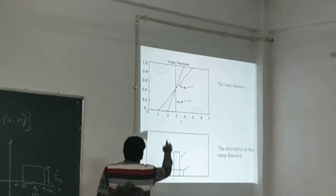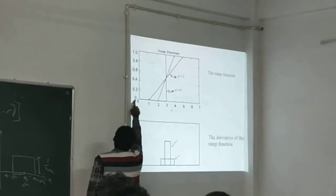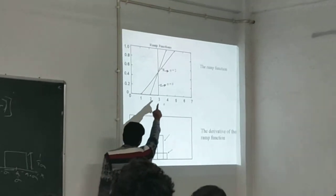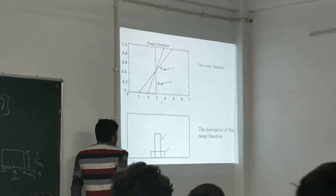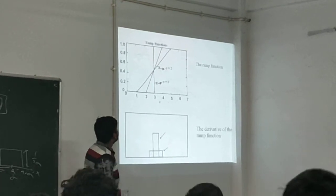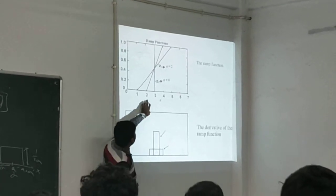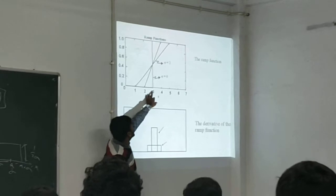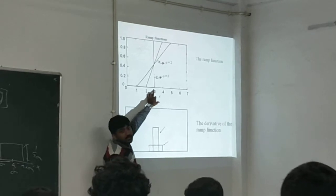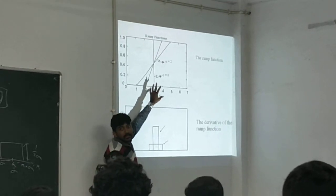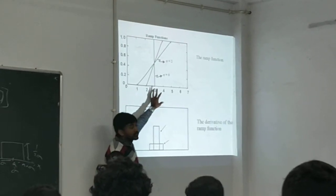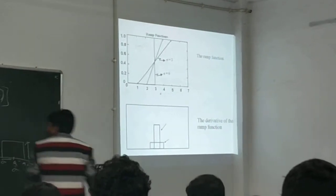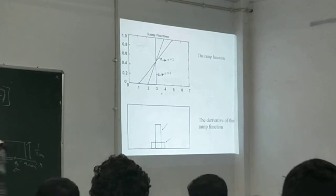The unit step function means here the value is 0, then 1, and the function has a jump discontinuity at sigma equals 0. So this is the ramp function, and its limit gives the unit step function. And we will get the derivative of this ramp function, which will give us the delta function.